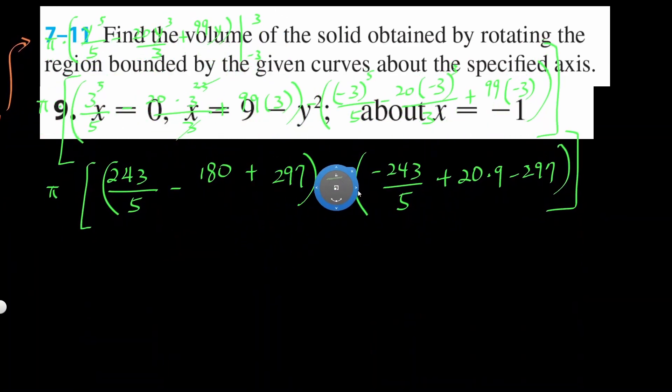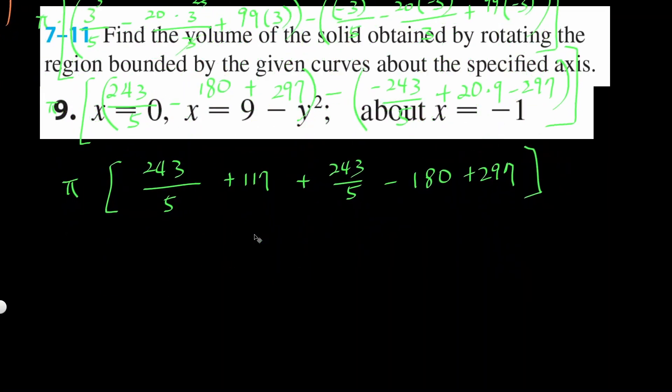Let's see if we can do this now. So pi here multiplied by 5 on the bottom, 243. That's going to be plus 117 minus, let's distribute minus here. It's going to be plus 243 over 5, minus 20 times 9 will be 180, and then it's going to get plus 297. More numbers.